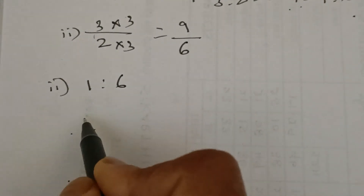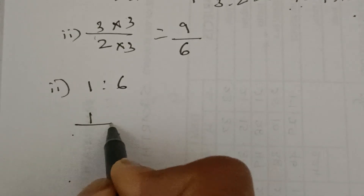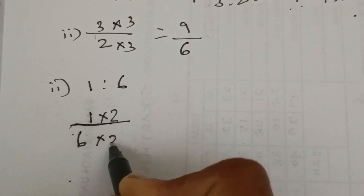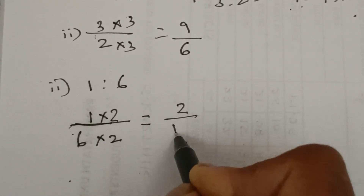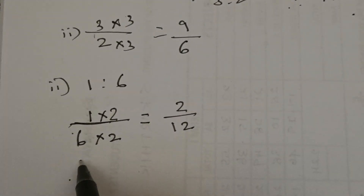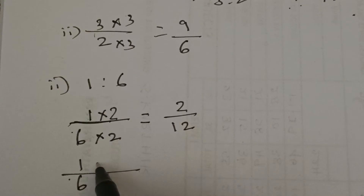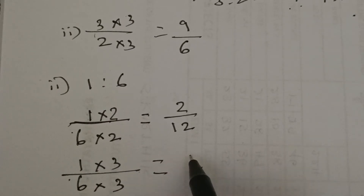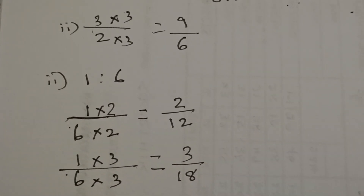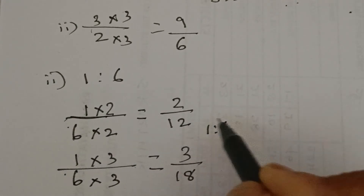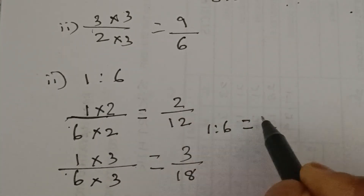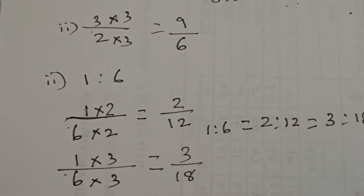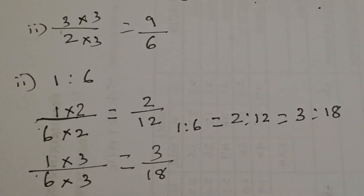Same way, for the second one: write the ratio in the form of a fraction — 1 by 6. Multiply both numerator and denominator by 2: 1 two is 2, 6 twos are 12 — that's the first equivalent ratio. For the second, multiply 1 by 6 by 3: 1 three is 3, 6 threes are 18. So, 1 is to 6 is equal to 2 is to 12 and the next equivalent ratio is 3 is to 18.